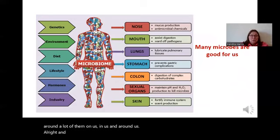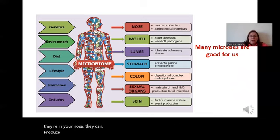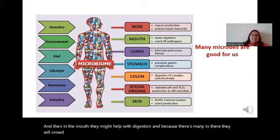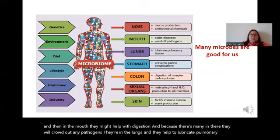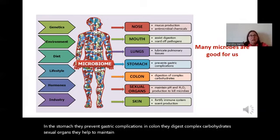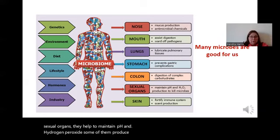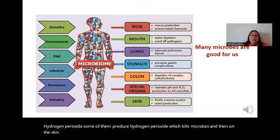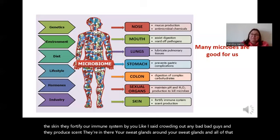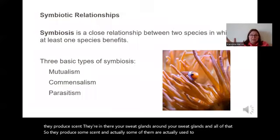Many microbes are really good for us. In the nose they can produce antimicrobial chemicals. In the mouth they might help with digestion and crowd out any pathogens. They're in the lungs and help to lubricate pulmonary tissues. In the stomach they prevent gastric complications. In the colon they digest complex carbohydrates. In the sexual organs they help maintain pH and some produce hydrogen peroxide, which kills microbes. On the skin they fortify our immune system by crowding out bad guys, and they produce scent — some are even used to produce perfumes, if you can believe that.